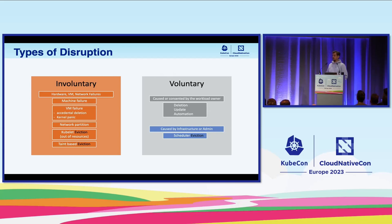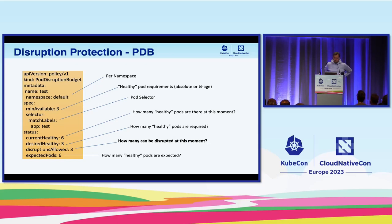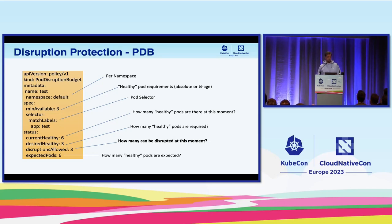Policies protect us against only a certain type of disruption — voluntary disruption specifically, only those in the blue boxes. The PDB spec consists of two sections: availability requirements and pod selector. Availability requirements are expressed in minAvailable and maxUnavailable — mutually exclusive fields which can be defined in absolute terms or relative values as percentages. The label selector matches the policy to our workload pods.